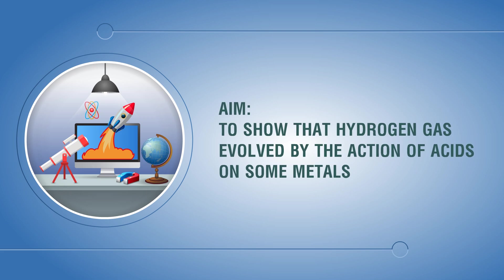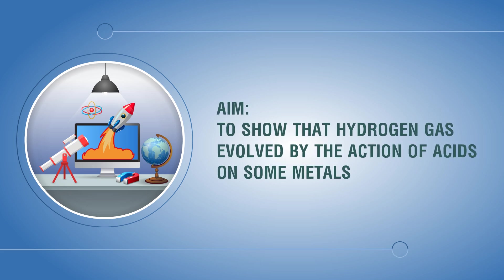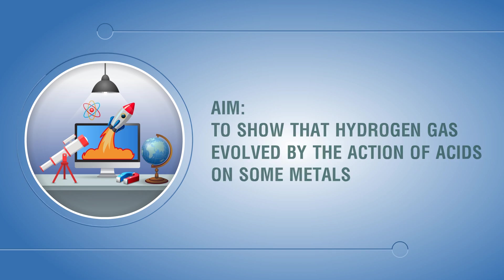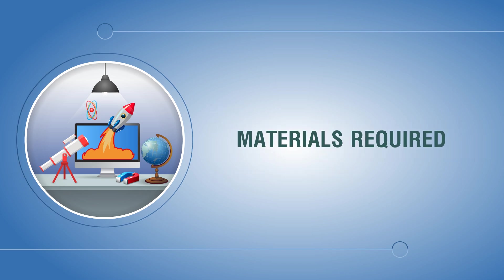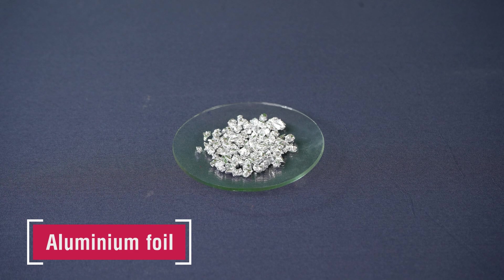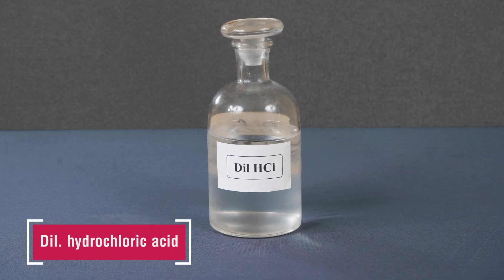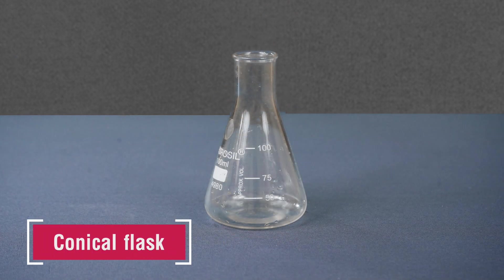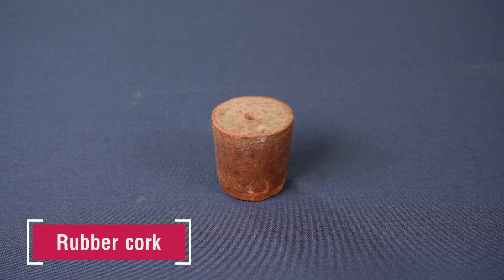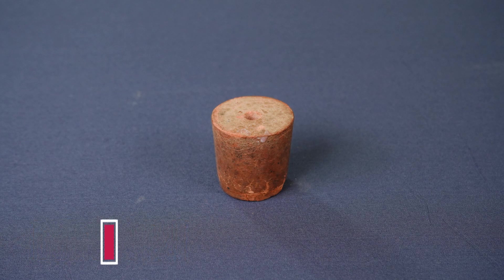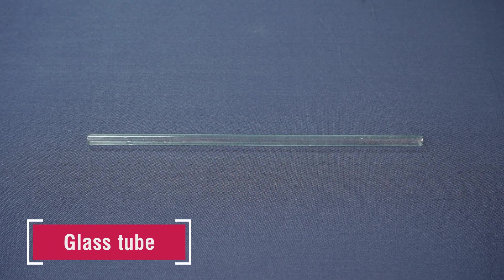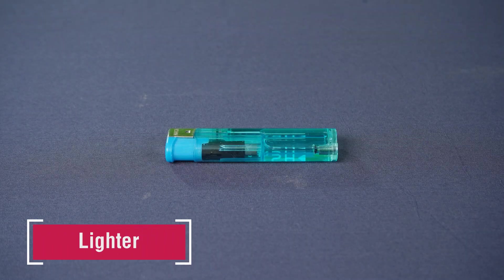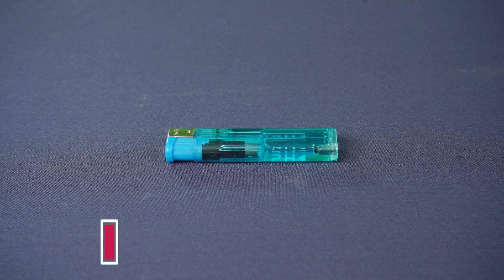Aim: to show that hydrogen gas is evolved by the action of acids on some metals. Materials required: aluminium foil, dilute hydrochloric acid, conical flask, rubber cork, glass tube, lighter, and candle.